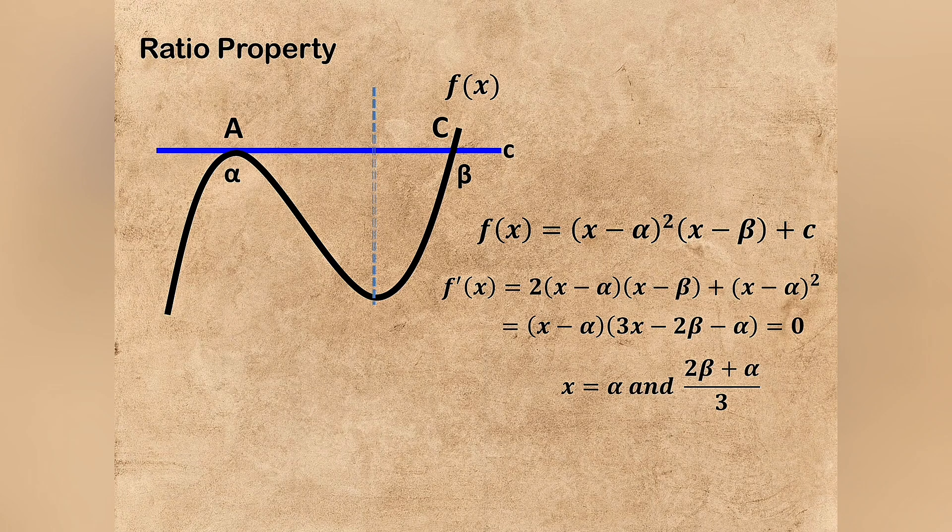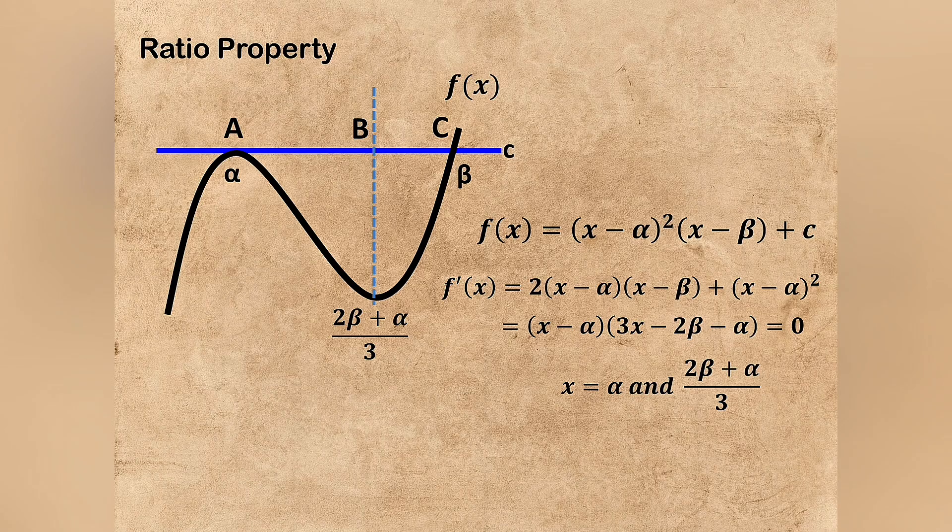Let's now draw the perpendicular line through the local min, and the intersection of it with the line c as capital letter B. Then the x coordinate at the point B is (2β+α)/3.